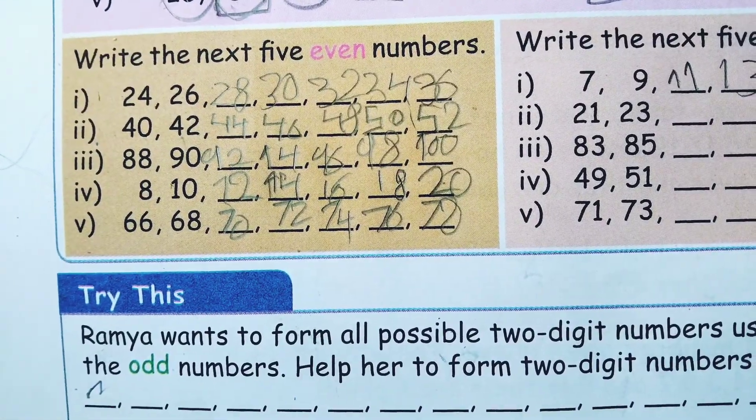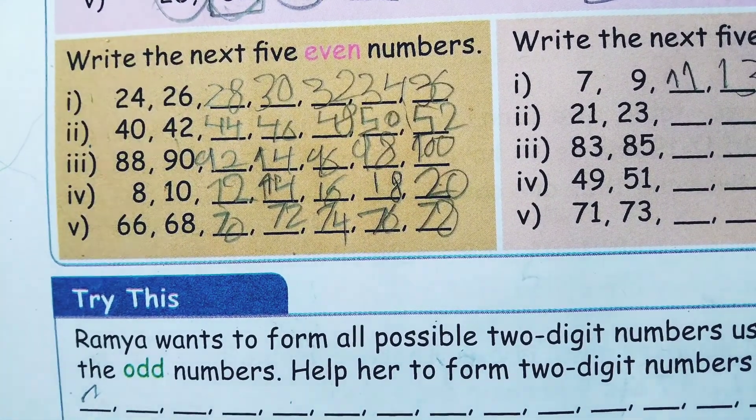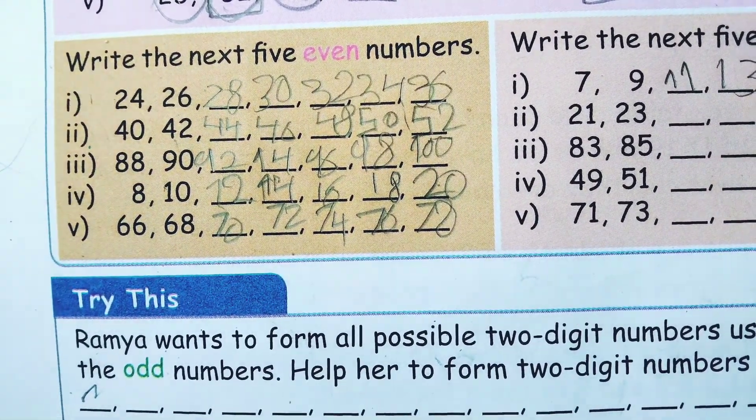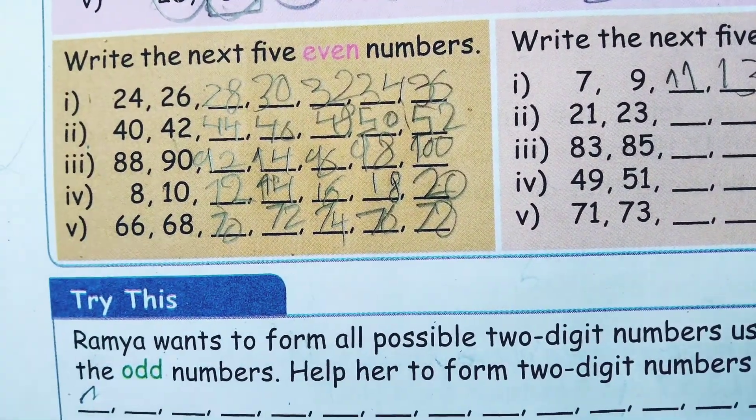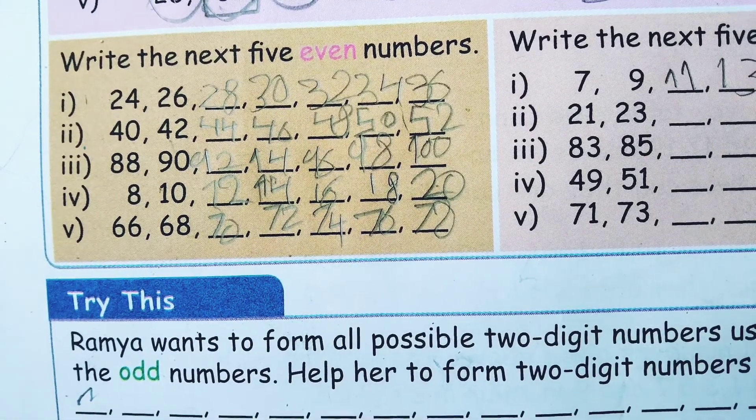Starting from 40: 42, 44, 46, 48, 50, 52.